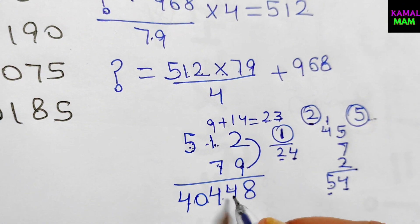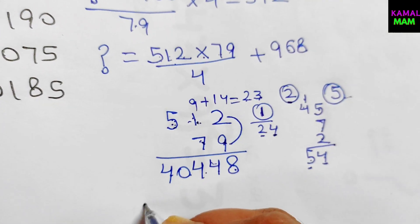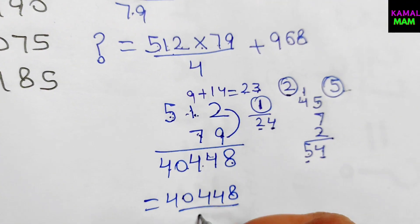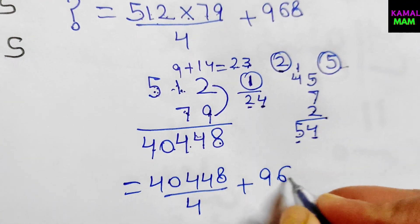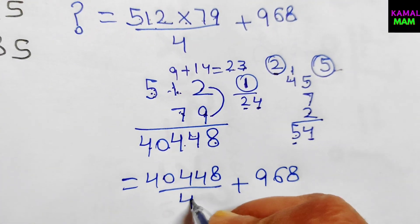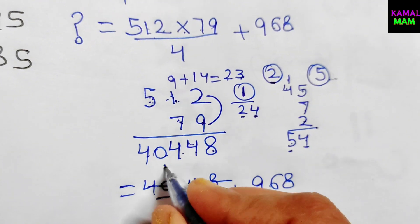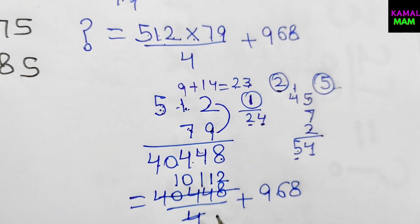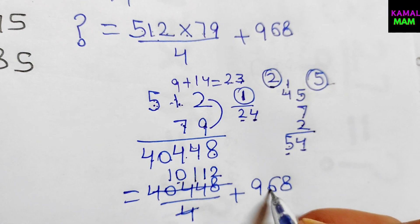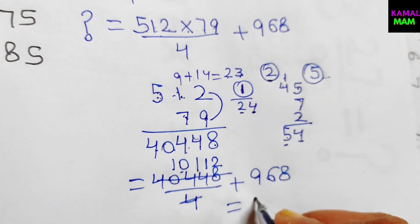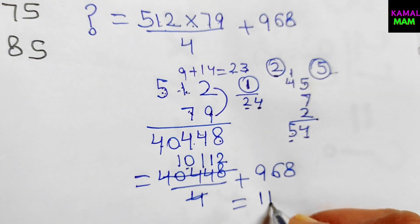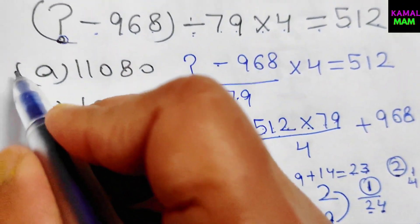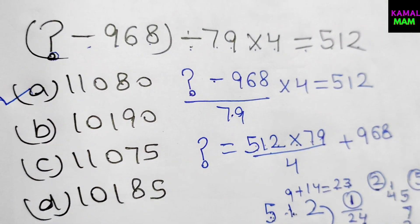Now divide 40448 by 4, which gives 10112. Then add 968: 10112 plus 968 gives us 11080. So the final answer for the question mark is 11080. Thanks for watching.